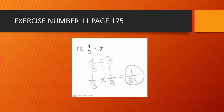Exercise number 11, page 175. We have 1 over 3 divided by 7. We write the 7 as a fraction: 1 over 3 divided by 7 over 1. Now we use the rule: keep, change, flip. So 1 over 3 times 1 over 7. 1 times 1 equals 1, and 3 times 7 equals 21. So the result is equal to 1 over 21.